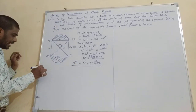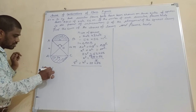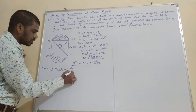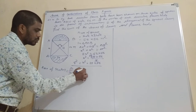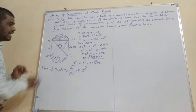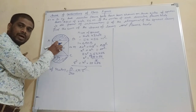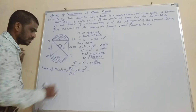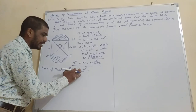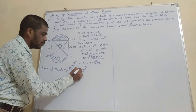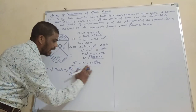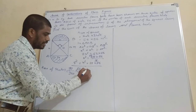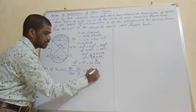Now, the area of a sector. The formula for area of a sector is (θ/360) × πR². Here theta is 90 degrees, which is the angle of the sector. So it becomes (90/360) × (22/7) × R², and R² = 28 × 56.